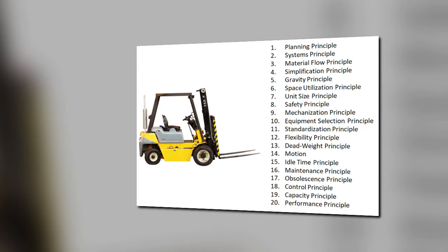Idle time principle says to reduce the idle or unproductive time of both material handling equipment and manpower. Maintenance principle states we have to plan for preventive maintenance or scheduled repair of all handling equipment. The obsolescence principle says to replace obsolete handling methods or equipment when more efficient methods will improve operations. Capacity principle says to use handling equipment to help achieve its full capacity. Control principle means to use material handling equipment to improve production control and inventory control. The performance principle determines efficiency of handling performance in terms of cost per unit handled.